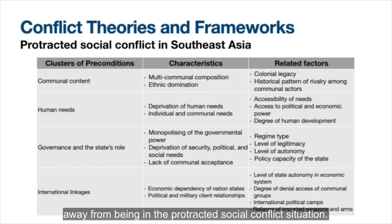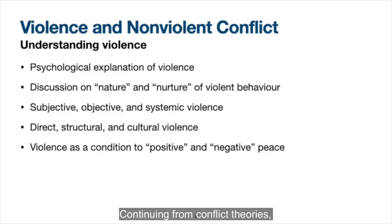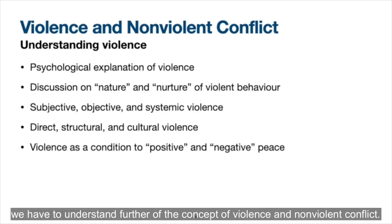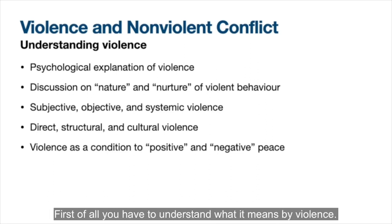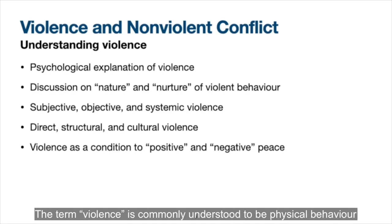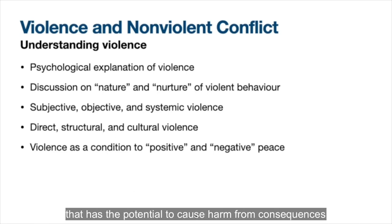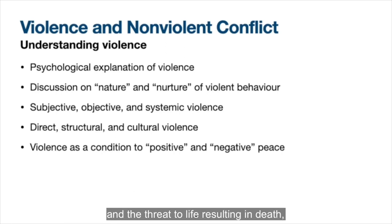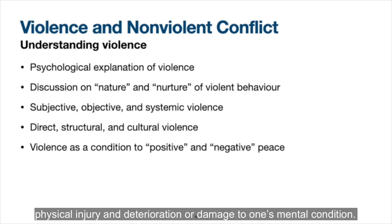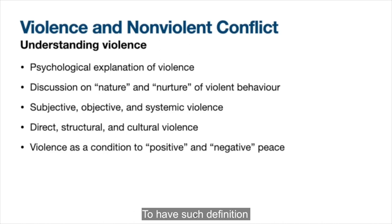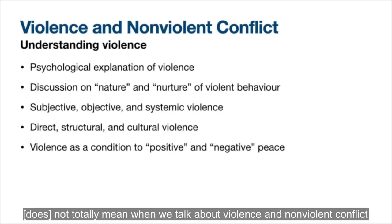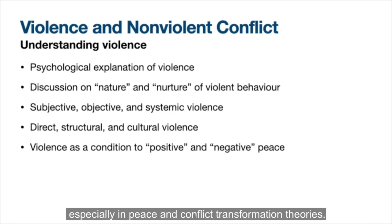This is something we must focus on in order to keep our society away from protracted social conflict situations. Continuing from conflict theories, we must further understand the concept of violence and non-violence conflict. First, we must understand what violence means. The term violence is commonly understood to mean physical behavior that has the potential to cause harmful consequences and be a threat to life, resulting in death, physical injury, and deterioration or damage to one's mental condition. However, this definition is not totally complete when discussing violence and non-violence conflict, especially in peace and conflict transformation theories.